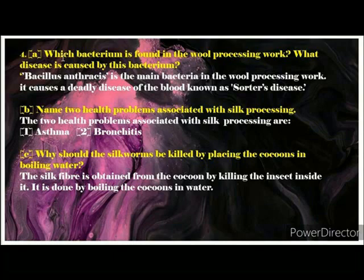Answer: The two health problems associated with silk processing are asthma and lung cysts. Question 18: Why should the silkworm be killed by placing the cocoon in boiling water? Answer: The silk fibres are obtained from the cocoon by killing the insect inside it. This is done by boiling the cocoon in water.